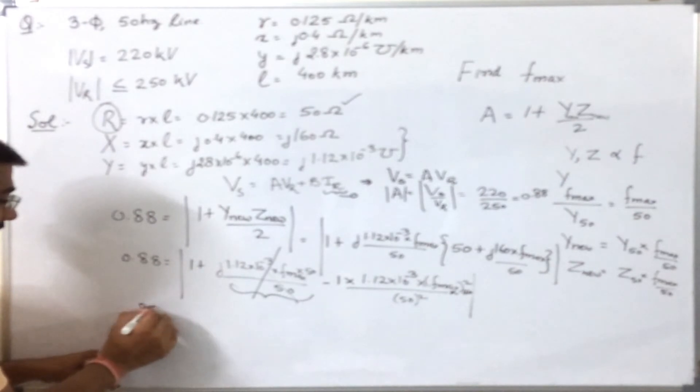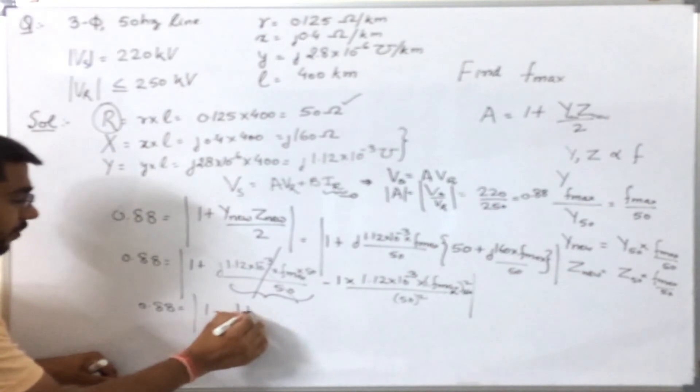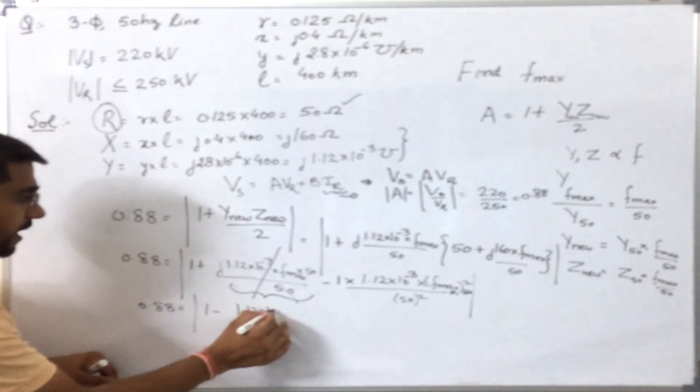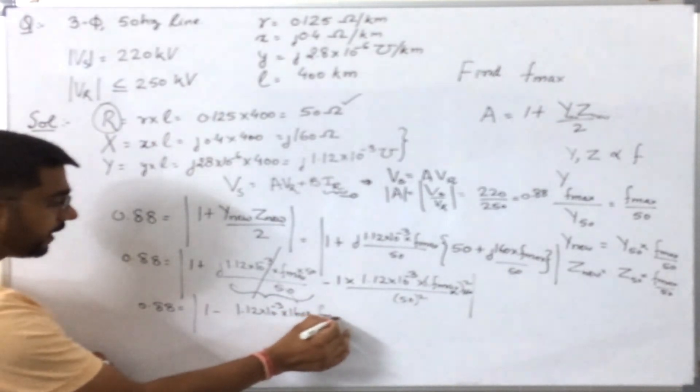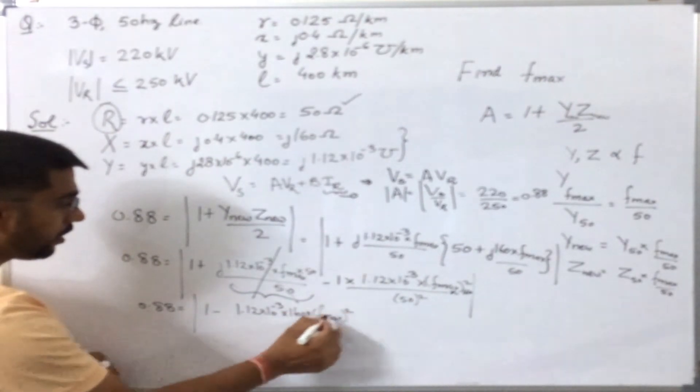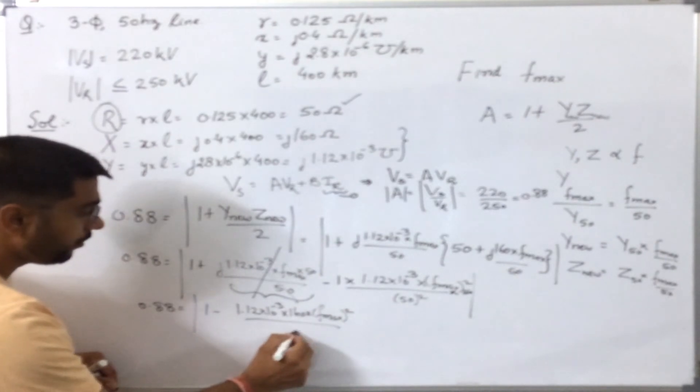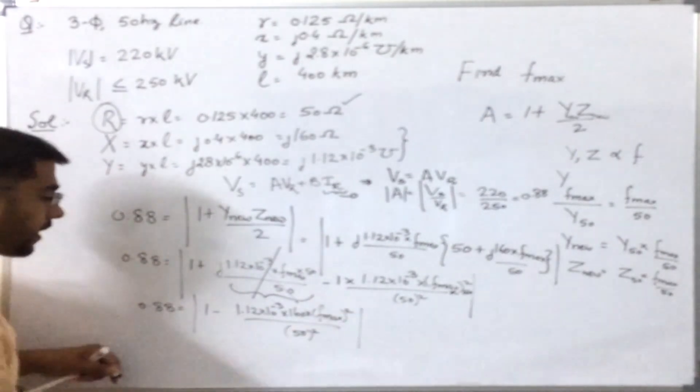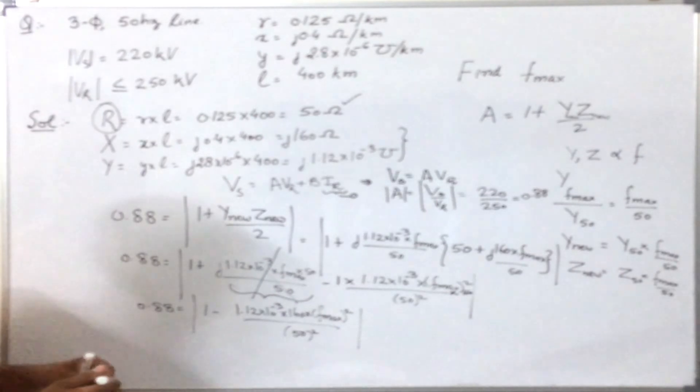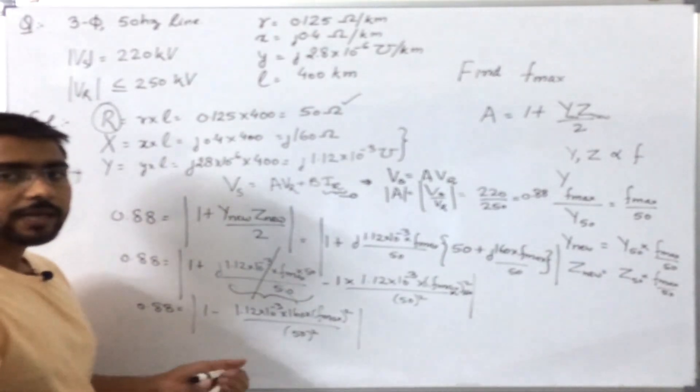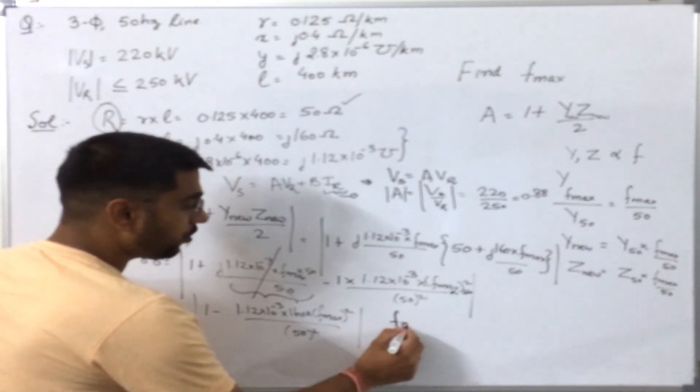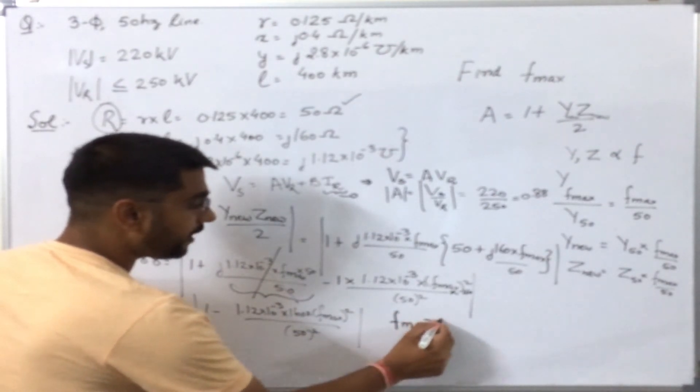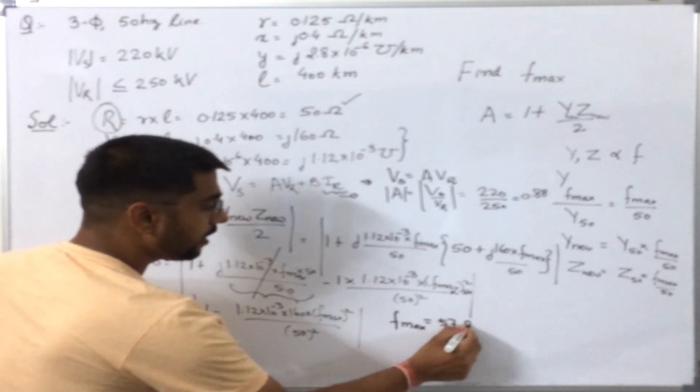So what I will get? I will get 0.88 should equal 1 minus 1.12 times 10 to power minus 3 times 160 times f_max squared over 50 squared. Now, on solving it further, I already solved this. I will get the value of f_max and it came out to be 57.9 hertz.